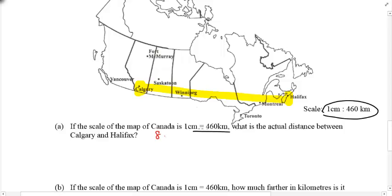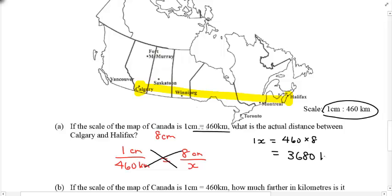I got an answer of 8 centimeters. So now, to find the actual distance, let's once again write our scale factor. 1 centimeter to 460 kilometers. This equals to 8 centimeters over x. And yes, cross-multiply to solve. We get 1 times x equals 460 times 8. That's, I think, 3,680 kilometers. So, the actual distance is 3,680 kilometers.